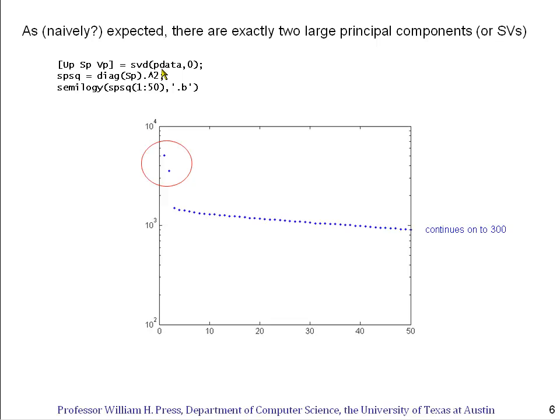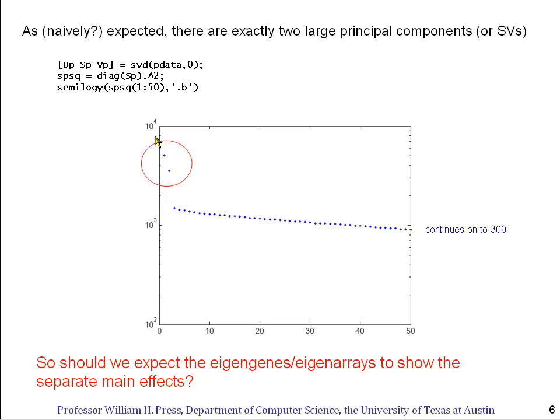So we do the SVD thing on that toy data. We take the data, find U, S, and V, and we're going to plot the magnitudes of the principal values squared on a log linear plot. And sure enough, the top two singular values are much bigger than all the rest, and all the rest are just slowly decaying. I've only shown you the first 50 here. We saw before what Gaussian noise looks like if I continue it out all the way to 300. So we put in two main effects. And indeed, we get out two large singular values that embody those main effects.